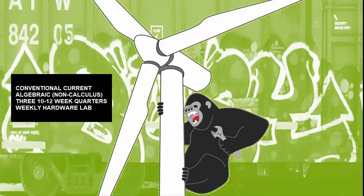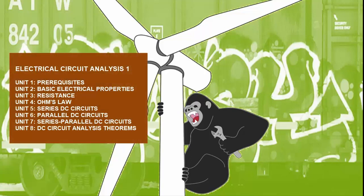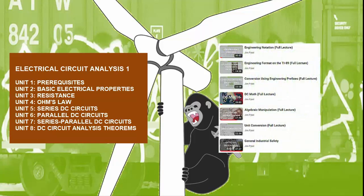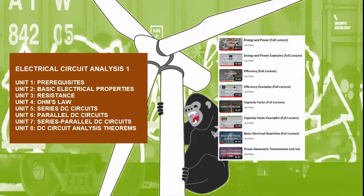The complete electrical circuit analysis series is intended to be delivered over the course of three 10 to 12 week academic quarters, which include a weekly supporting hardware lab with the guidance of an instructor. The series starts off with a DC circuit analysis playlist, which begins with a review of basic electrical math, engineering prefixes, and unit conversion. Take this first section seriously as it establishes standard operating procedures for the remainder of the lecture series. The next unit discusses basic electrical quantities like voltage, current, resistance, power, and energy at an introductory level, and introduces electrical schematics and important concepts like efficiency and capacity factor.